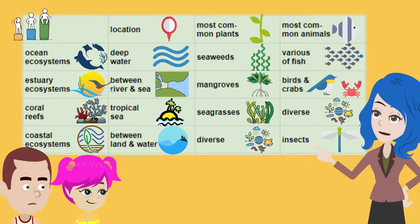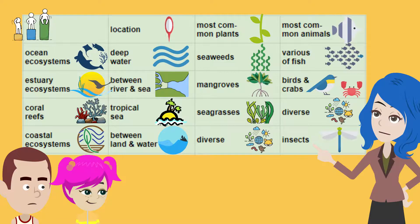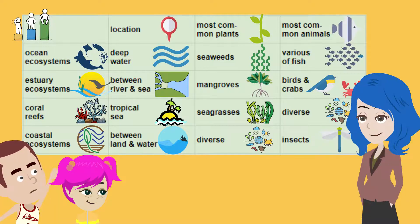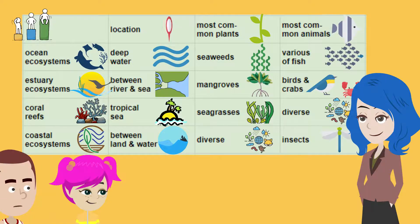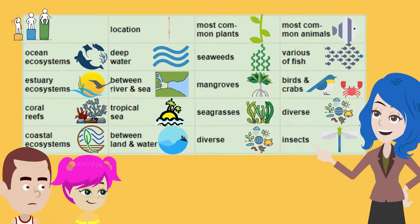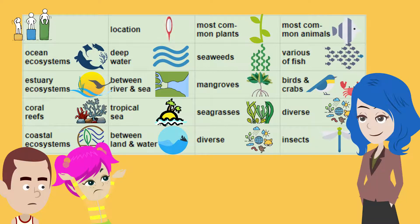What is the most common plant in the estuary ecosystem? The mangroves. What is the most diverse ecosystem? The coral reef.